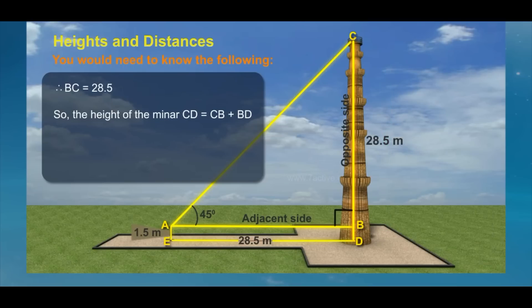So the height of the minar CD equals CB plus BD. Here we know BD equals AE equals 1.5 metres. CD equals 28.5 plus 1.5, which equals 30 metres.